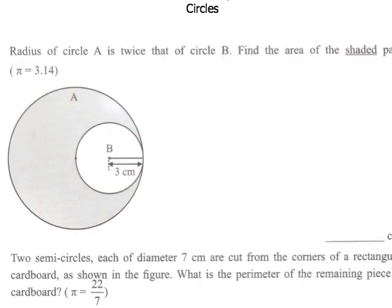The first question says this: radius of circle A is twice that of circle B. Find the area of the shaded part. So first off, let's take a look at circle B. You can see that the radius of circle B is 3 cm. So how do I find the area of this circle? Can I find the area of this circle?